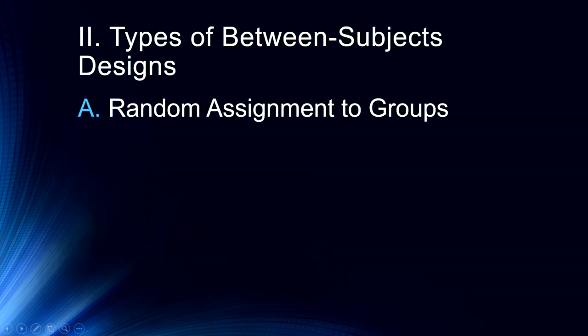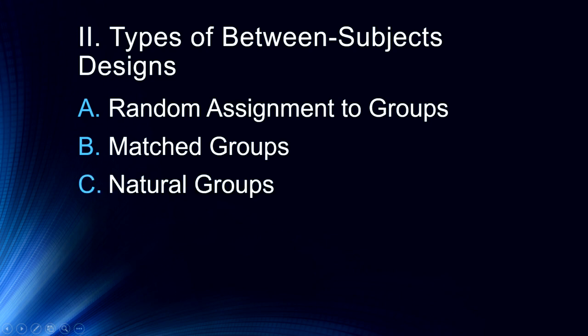This gets us then to different types of between subjects design. The first of these are the most straightforward random assignments to groups, in which case we will randomly assign people to groups. We might also have a matched group design or natural groups design, which is related to quasi-independent variables, and we'll talk about that here in a moment.